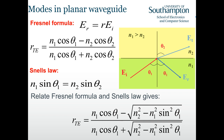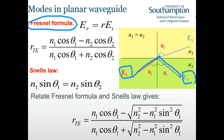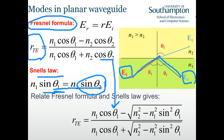We have Snell's law that tells us about the direction, and then we have the Fresnel formula that tells us the strength. We have TE polarization so that we can investigate the strength change in the electric field. From the Fresnel equation, we use Snell's law to replace theta_2 as a function of theta_1, so there is only theta_1 remaining.